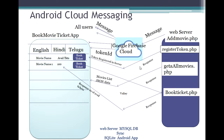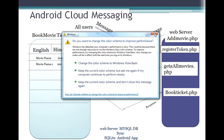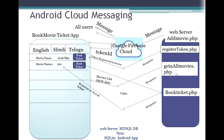Now, the user is a new user of the book movie ticket app, but data already exists on the server. So we need to fetch that entire data. We are coding getAllMovies.php, which retrieves all movie data from the database, generates JSON, and puts it in the response. That response is sent to the Android app. The JSON data contains complete information about all movies, and we read this JSON data and load it into the SQLite database in the Android app.